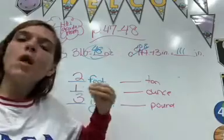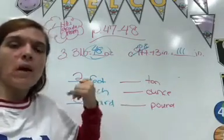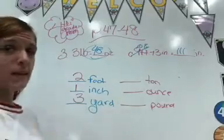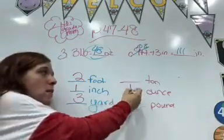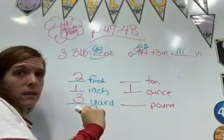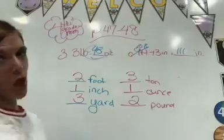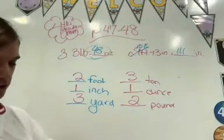So what is the smallest one here? Ton, ounce, or pound? Ounce, you guys. There are 16 ounces in a pound. Ounce is the smallest. What's the next smallest? Pound. And then what's the biggest one? Ton. The elephant one. Dun, dun, dun, dun, dun.